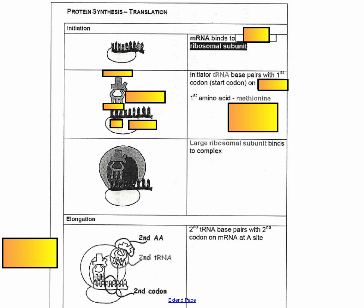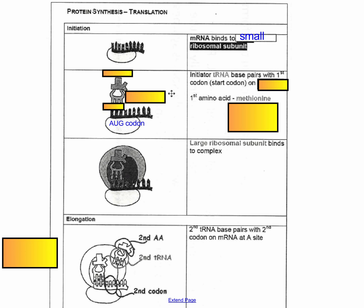So there are a couple of things you need to know. Here's the mRNA — I've been using a red strand for that. Every three bases is called a codon, and each codon codes for one amino acid. In the very first step of initiation, the ribosome constructs itself around the mRNA molecule. The mRNA first binds to the small ribosomal unit, and the very first codon signifies the beginning. Often it's AUG, which is a common start codon, and AUG codes for the amino acid methionine.